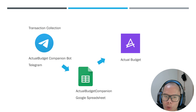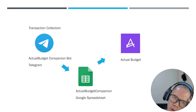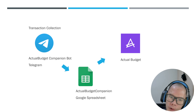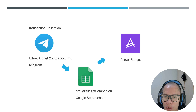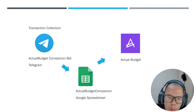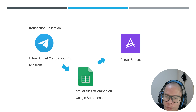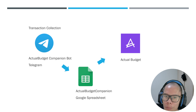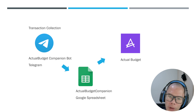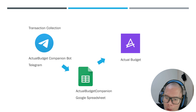Today's topic is data entry — entering the expenses. This part is important because these transactions and expenses form what makes up the budget itself, the tracking part of it.